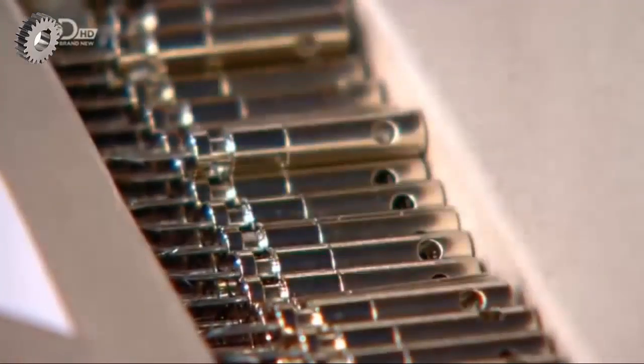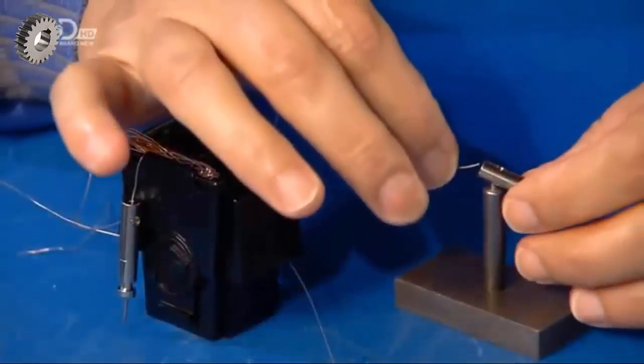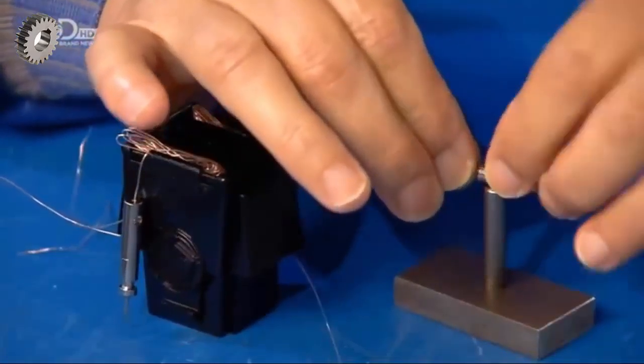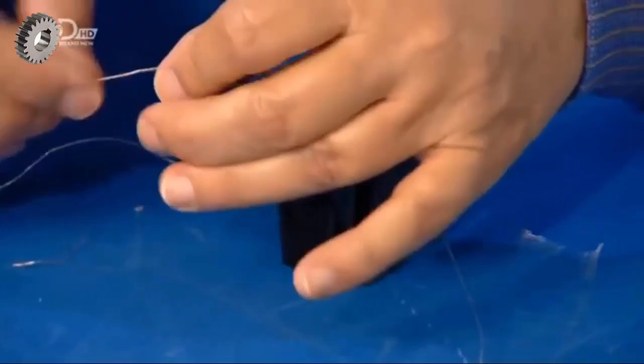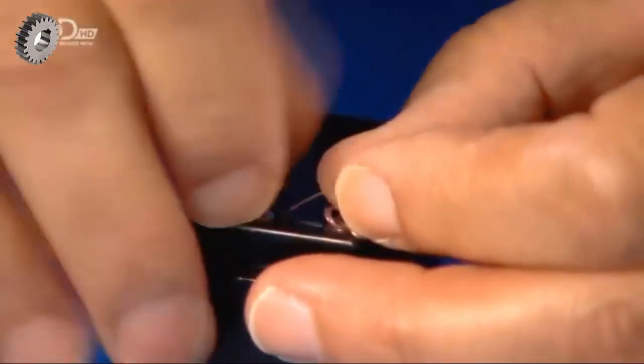He's now ready for the barbed taser darts. He threads the end of each wire bundle through one and knots it. He installs the darts in the cartridge, using a special tool to seat them correctly.